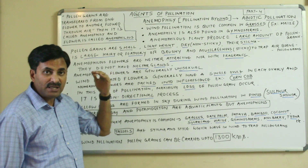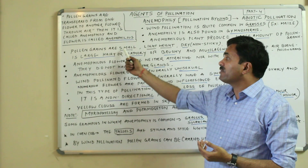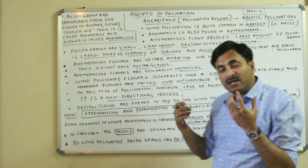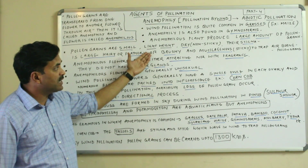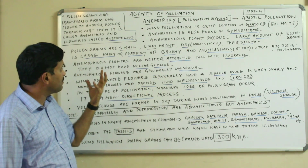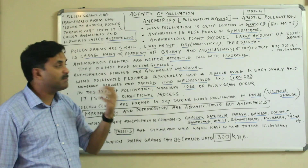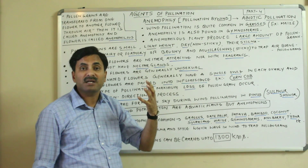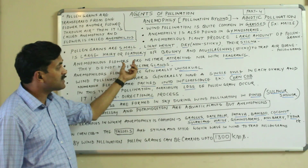There are special features of pollen grains in wind-pollinated flowers. The pollen grains are small, light in weight, and dry — meaning non-sticky — because they are carried by air currents and must not be too large or heavy. The stigma must be large and hairy, feathery, brushy, or mucilagenous (sticky), so that it can trap airborne pollen grains.